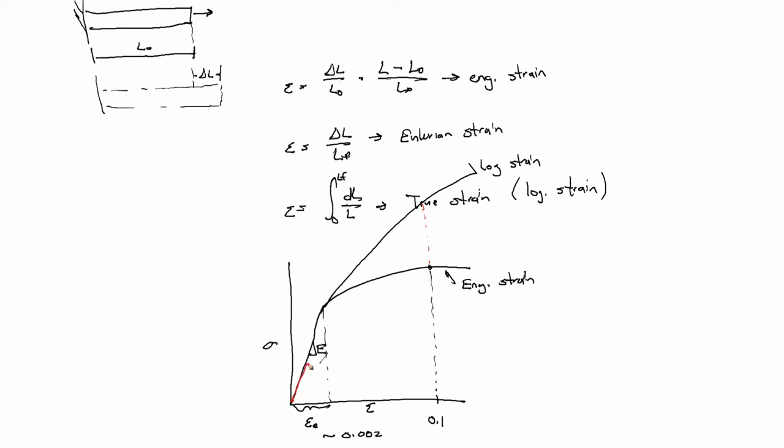If we were to load this thing, if we were to come to here and then unload it all the way to 0, then we were to immediately restart the loading. We would start from here because we've had permanent strain. We would go back up this line elastically until we hit that point, and then we'd begin to deform plastically again or inelastically.